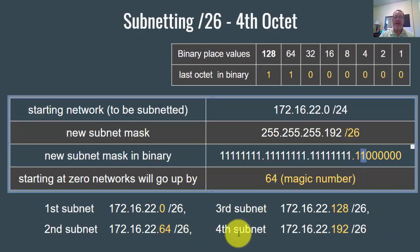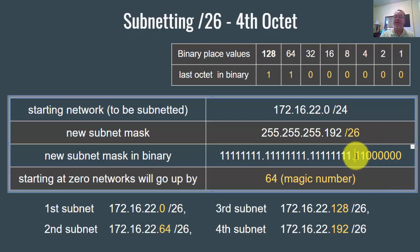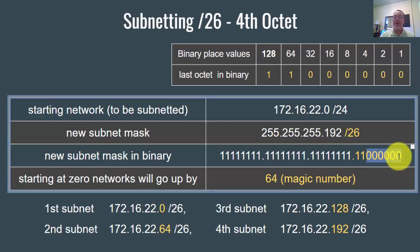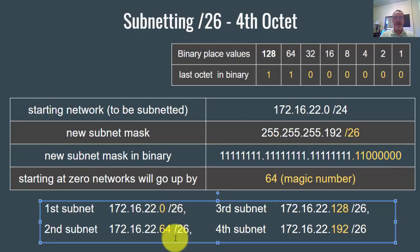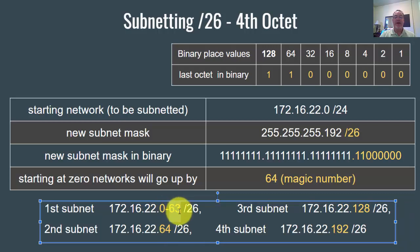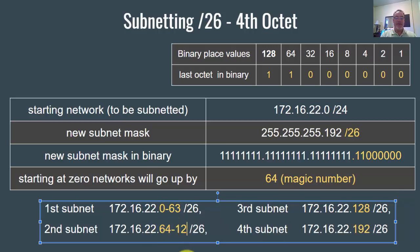You've created four subnets. You changed slash 24 to slash 26, adding two subnet bits — two to the second power is four subnets. You now have six zeros in the host bits, giving 64 minus two hosts per subnet. The first subnet goes from zero to 63, where zero is the network and 63 is the broadcast. The next network starts at 64 and goes up to 127, where 64 is the network and 127 is the broadcast. And so on.